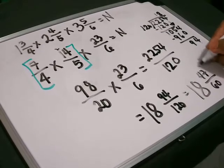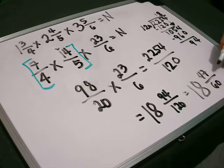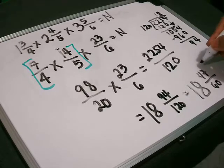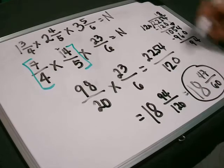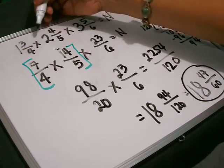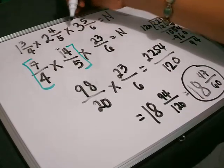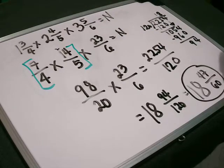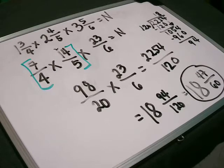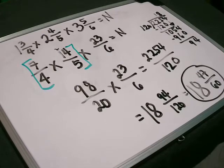This is a prime number, so we cannot reduce this anymore to its lowest term. This is now our final answer. The answer for 1 and 3/4 times 2 and 4/5 times 3 and 5/6 is 18 and 47/60. That's how we do the multiplication of mixed numbers.